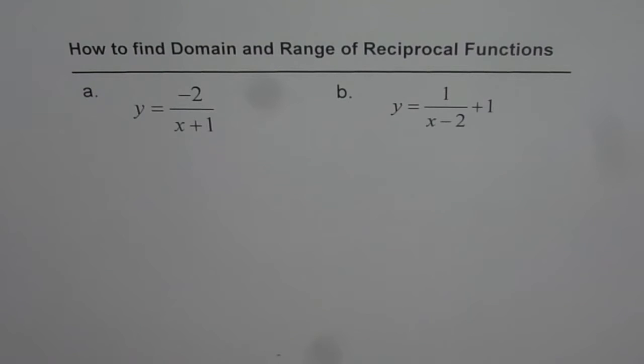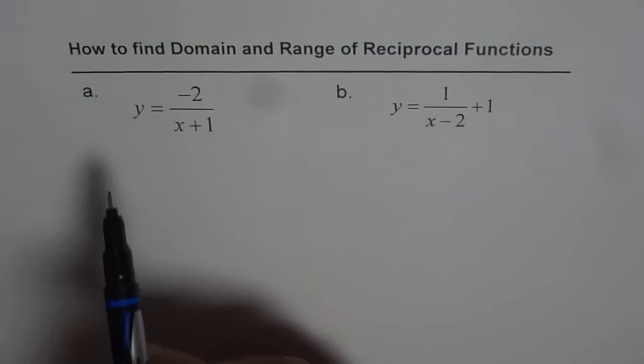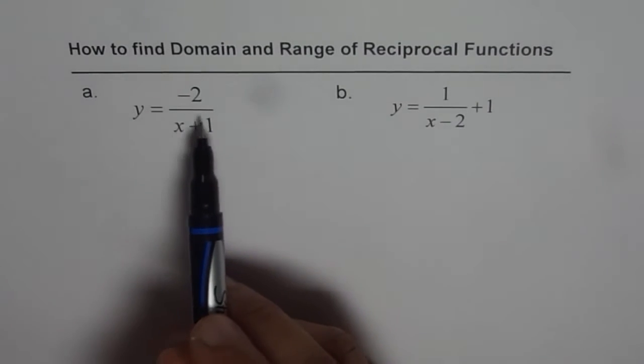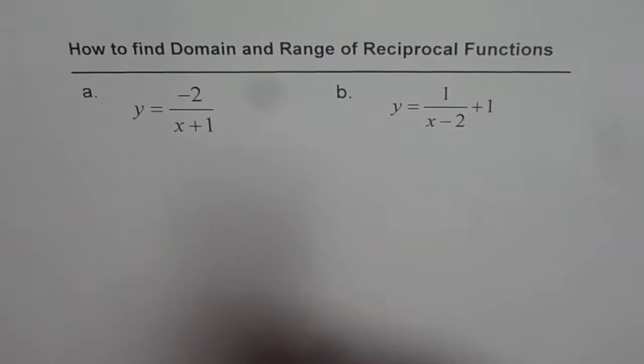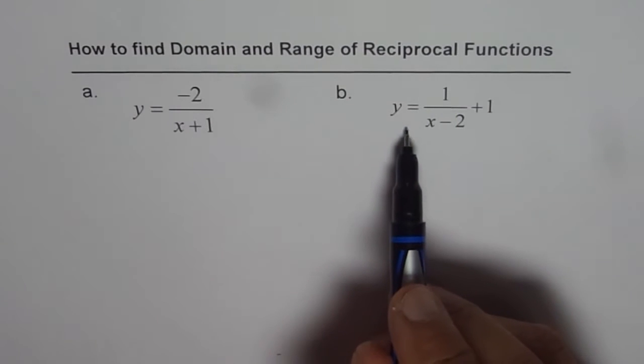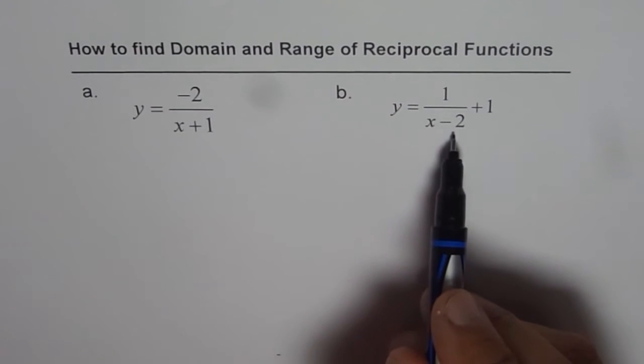Let us understand how to find domain and range of reciprocal functions. We have two transformed reciprocal functions here. The first one is y equals minus 2 divided by x plus 1, and the second one is y equals 1 over x minus 2 plus 1.